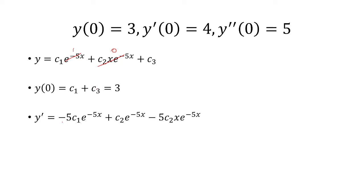Next we take the first derivative and plug in x equals zero. This term becomes zero, and e to negative 5x is just 1. So we have negative 5c1 plus c2 equals 4.